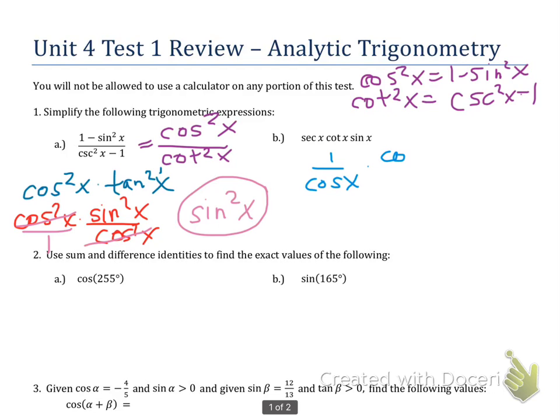Cotangent becomes cosine x over sine x. That's the quotient identity. And sine just stays sine, but I'm going to put it over 1, just to make it easier to see where I cross things out.